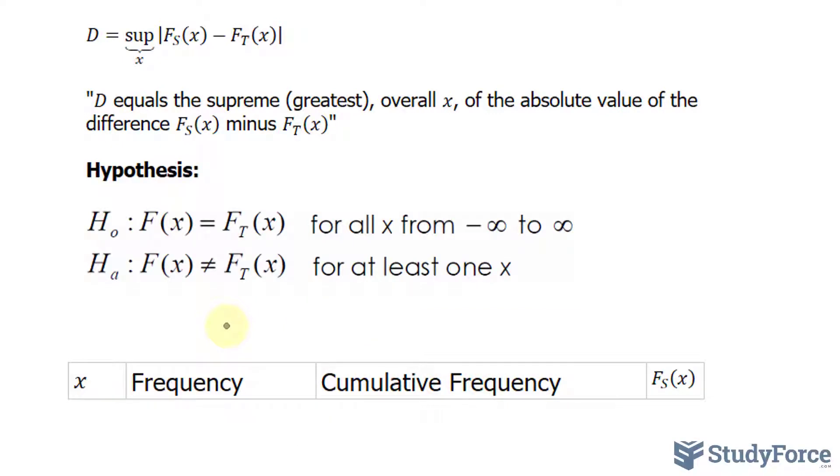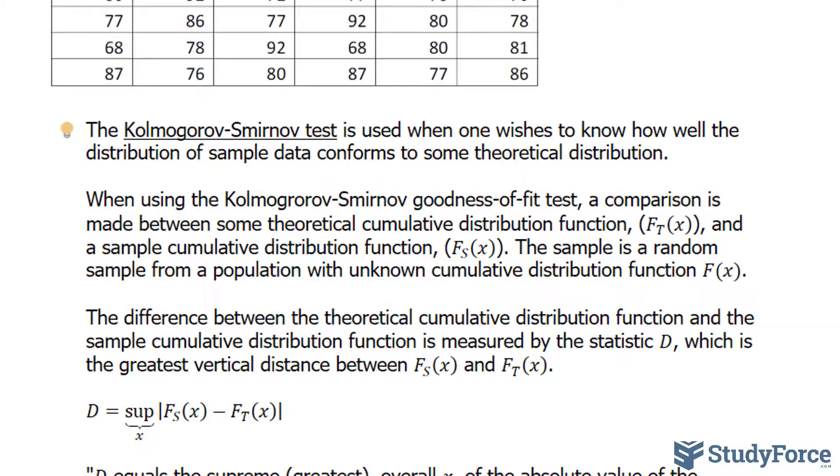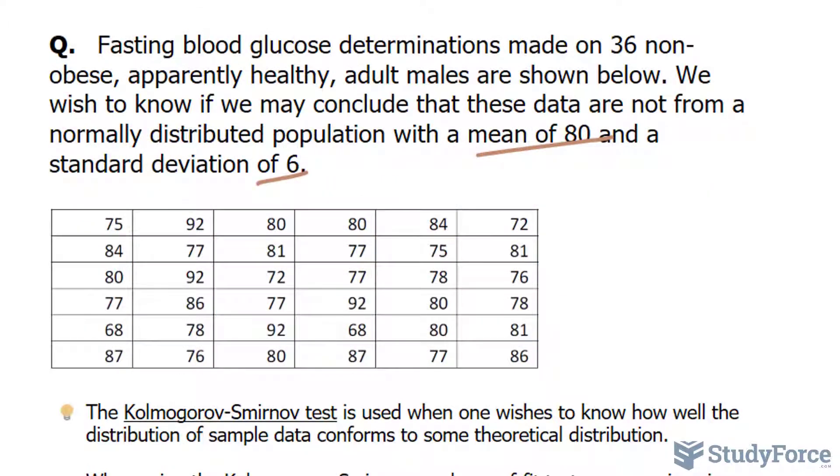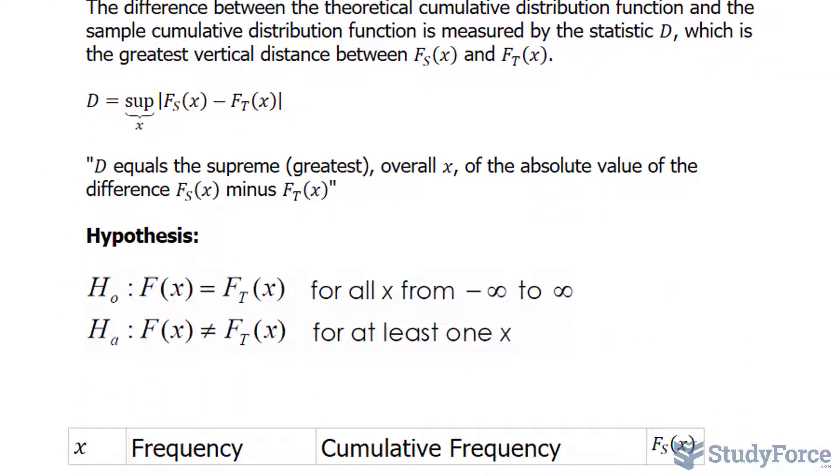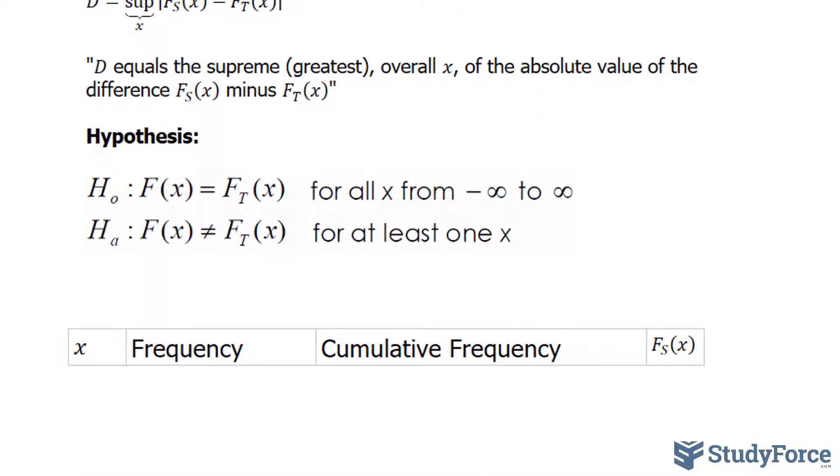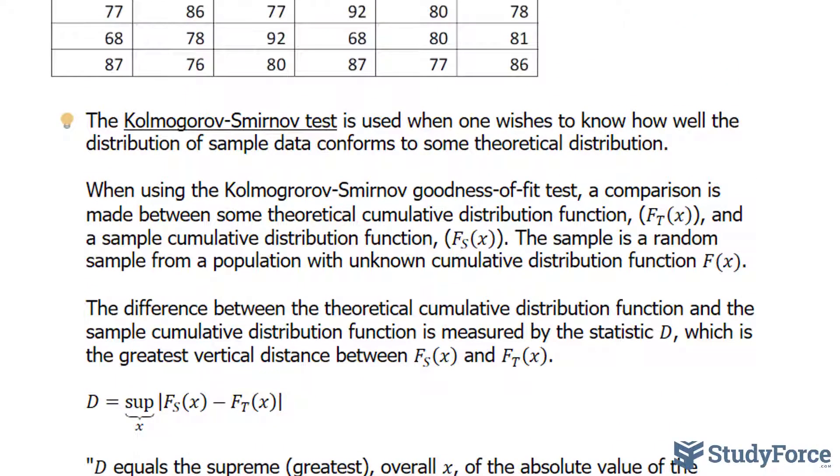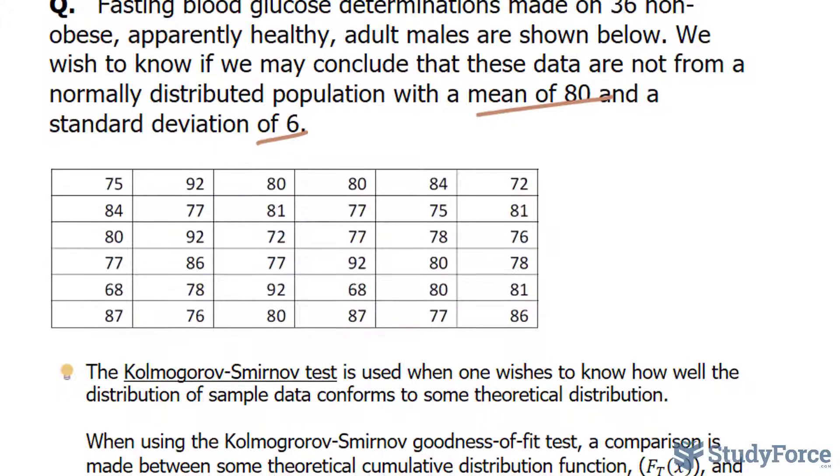Next, what we want to do is create a table, and we'll take each of these observations, the ones shown on your screen, and write down their frequency, their cumulative frequency, and based on this value and that value, we find the F_s value. So let's go ahead and write down all of these observations and write down their frequencies.